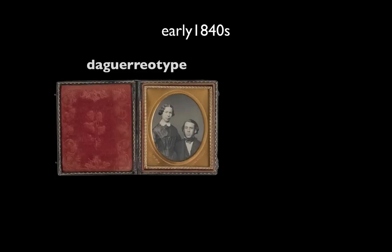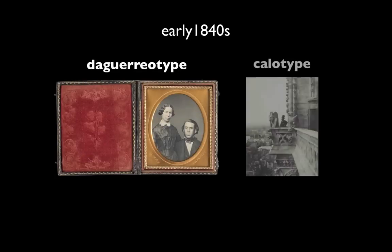In the 1840s, much of the world was introduced to photography through the daguerreotype and callotype, two popular processes that began to democratize portraiture and place it in the hands of the middle class.